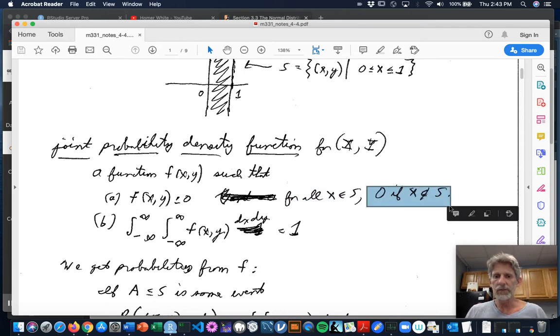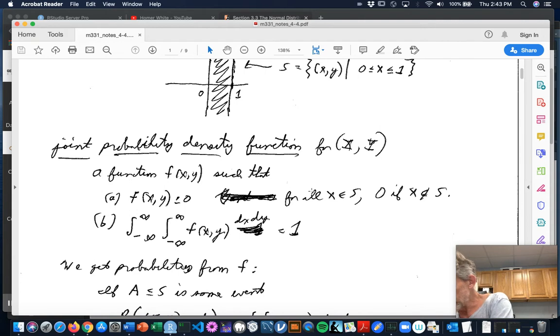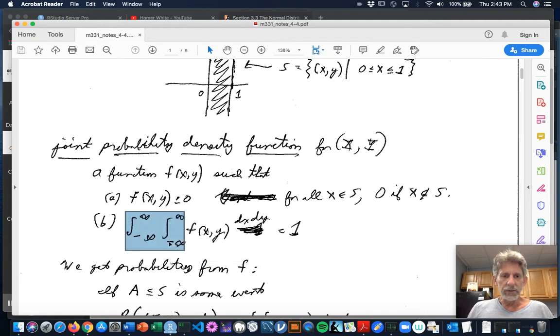And if XY is not in the sample space, it better say zip or Zippo chance. And anyway, if you integrate over the entire plane, the f of XY, with one of these double integrals, you get a 1.